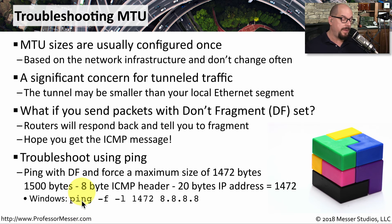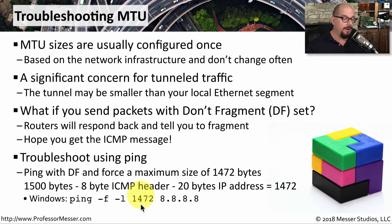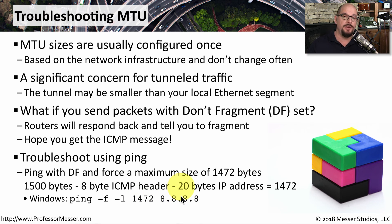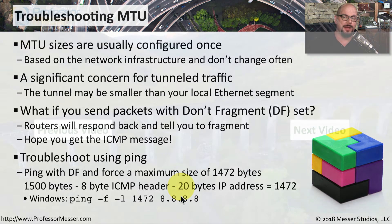If you're in Windows, you would use the ping command with a dash F to tell it not to fragment, and then a dash L to specify the length. In our case, we're going to use 1,472 and then the IP address of the device on the other side of this communication. If that ping doesn't work, we'll lower the amount of data we're sending through and try again. We'll keep lowering that amount until we finally find exactly the right value to send the largest amount of data through without requiring any type of fragmentation.